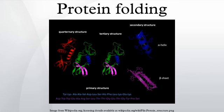Dual polarization interferometry is a surface-based technique for measuring the optical properties of molecular layers. When used to characterize protein folding, it measures the conformation by determining the overall size of a monolayer of the protein and its density in real-time at sub-angstrom resolution, although real-time measurement of kinetics is limited to processes that occur slower than 10 Hz. Similar to circular dichroism, the stimulus for folding can be a denaturant or temperature.